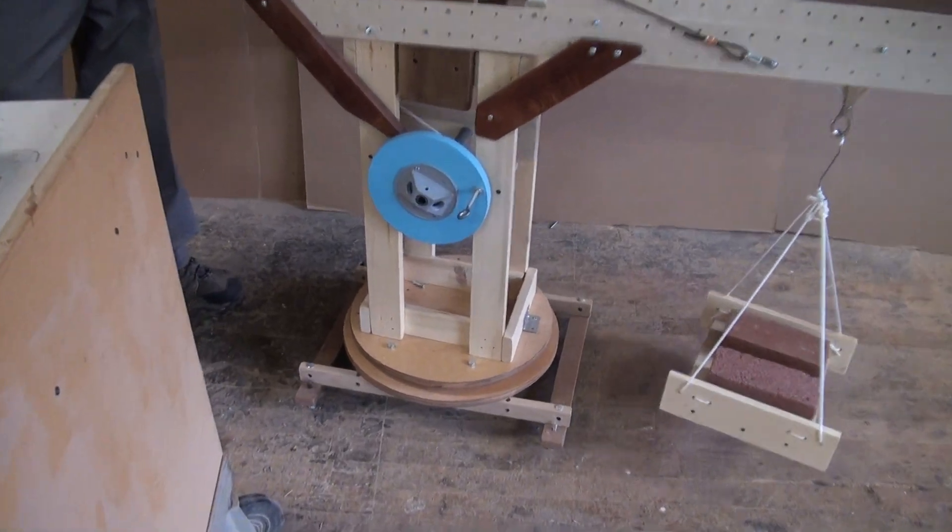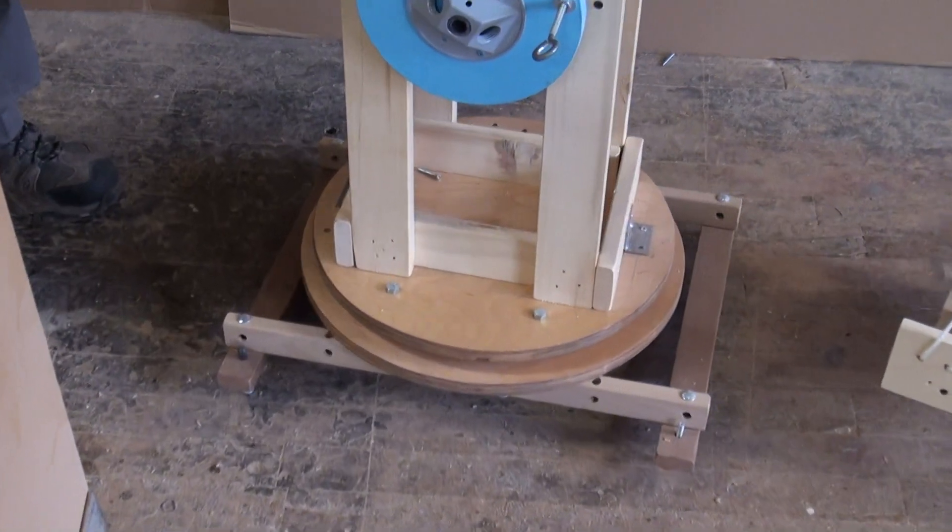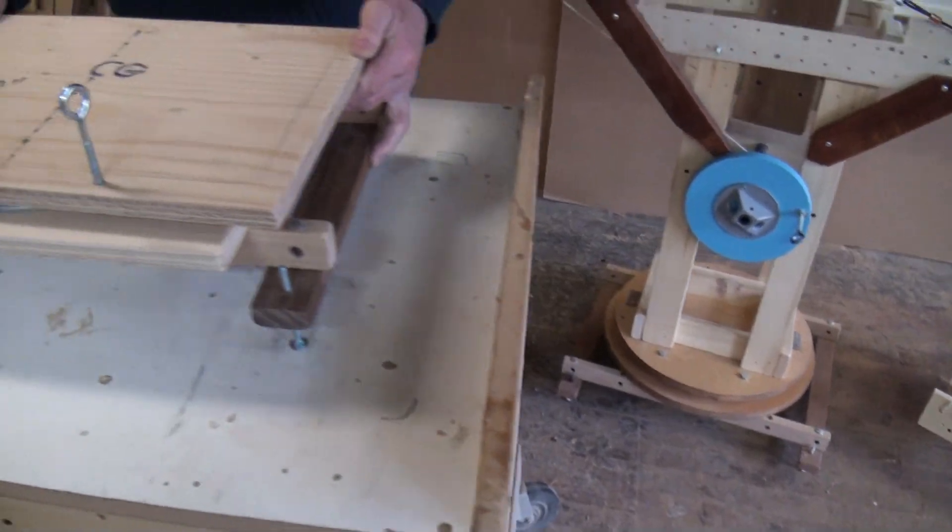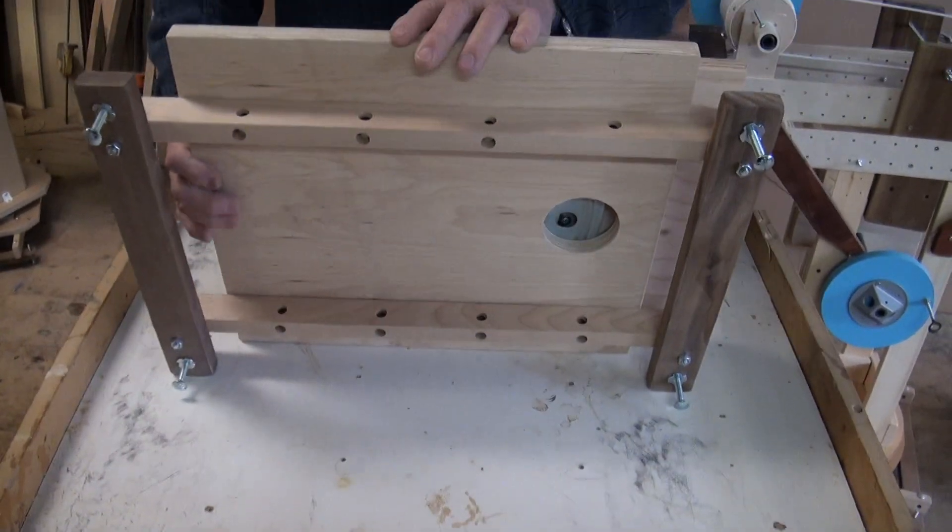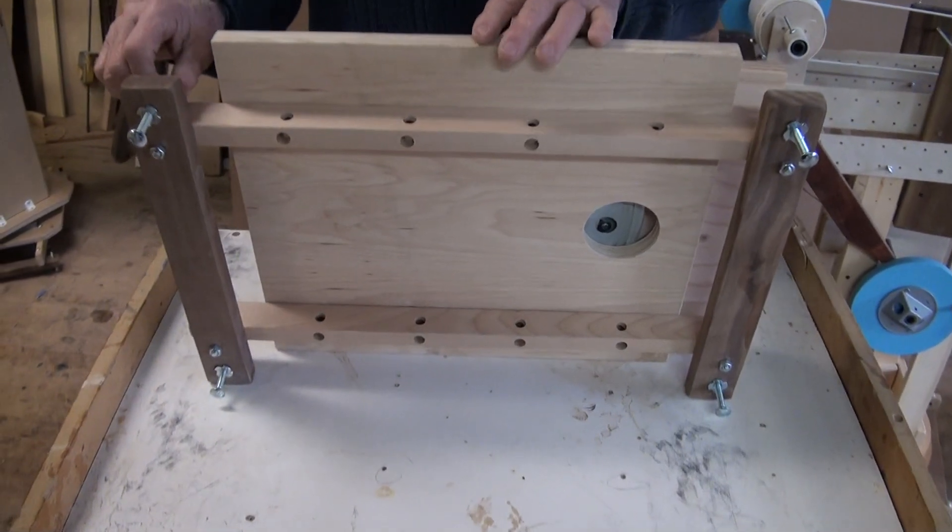So there's the swivel base at the base of the tower. Here's the same one here. These four bolts are called outriggers.